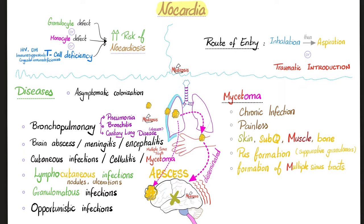Diseases caused by Nocardia include mycetoma. Mycetoma literally means a mass — 'oma' is a mass, and 'myc' is from mycology/fungus, so it means a fungus ball or fungus mass, because Nocardia was previously classified as a fungus. Mycetoma is a chronic, painless infection that affects the skin, then goes deeper into subcutaneous tissue, muscle, and even bone — with pus formation, suppurative granulomas, and formation of multiple sinus tracts.